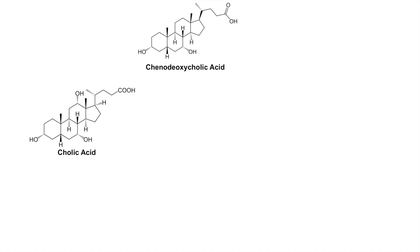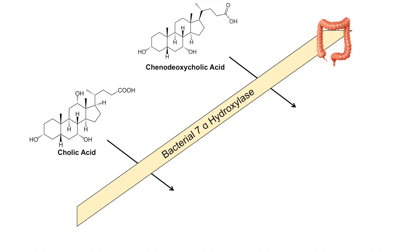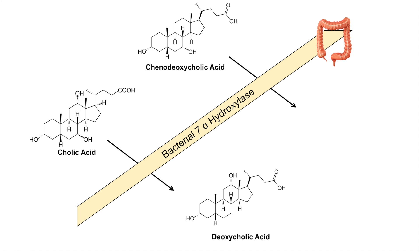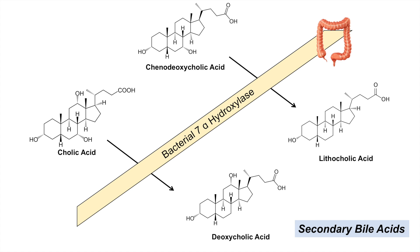Another process can take place with the primary bile acids after they travel through the small intestine and enter the large intestine. Most bile acids will be absorbed at the terminal ileum and recycled through enterohepatic recirculation. However, some primary bile acids — cholic acid and chenodeoxycholic acid — can be acted on by bacterial enzymes. Bacteria located mostly in the large intestine have an enzyme known as bacterial 7-alpha-dehydroxylase, which can act on these primary bile acids to form deoxycholic acid from cholic acid and lithocholic acid from chenodeoxycholic acid.